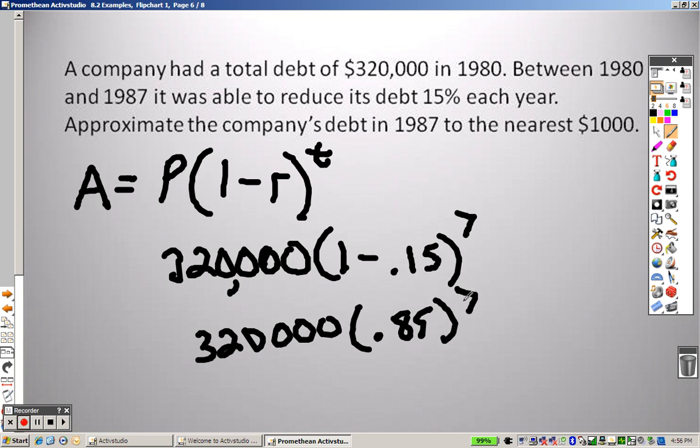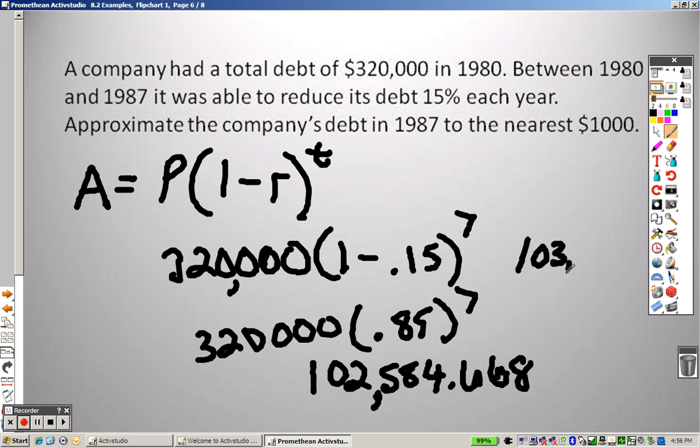320,000 times 0.85 to the seventh. We end up getting, and they said they want it to the nearest thousand, so we'll go with $102,584.668 is what we have. So the nearest thousandth, I guess, we would round up to $103,000. If we round to the nearest thousandth.